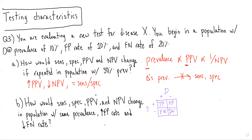If we increase the false positive rate, this is going to lead to a decrease in specificity and a decrease in PPV. We can remember all of these have a P in them and are associated with one another. Specificity is the probability of getting a negative test result given you do not have the disease, and PPV is the probability of having disease given a positive test result. So if false positives go up, our denominator goes up and the value goes down.